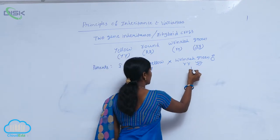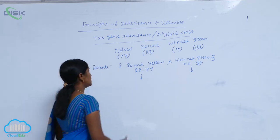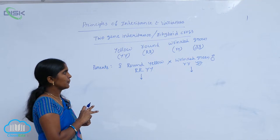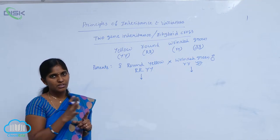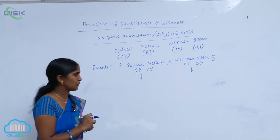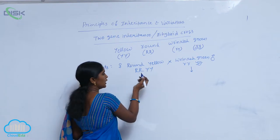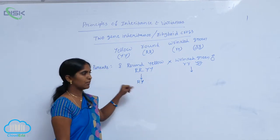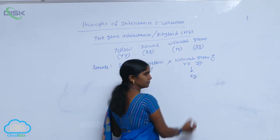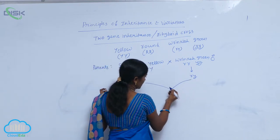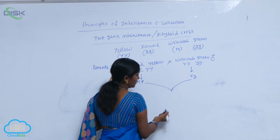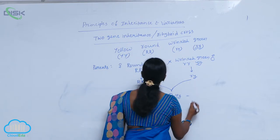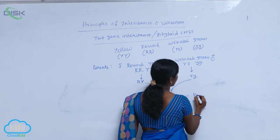During gametogenesis, two traits are selected: one is the color of the seed, another is the shape of the seed — one dominant, one recessive. From capital R capital R capital Y capital Y, one gamete is produced: capital R capital Y. From the other parent, the gamete is small r small y. During fertilization (syngamy), a zygote is formed consisting of yellow and round characters.